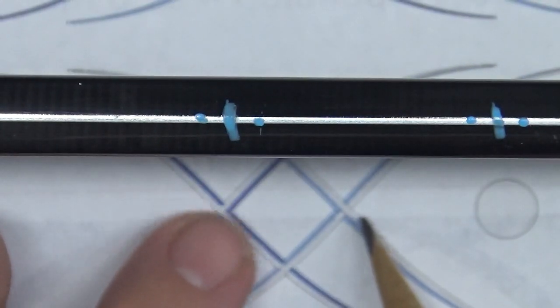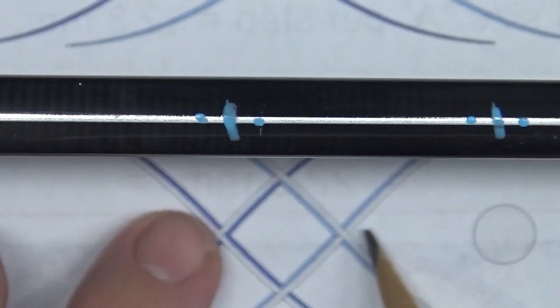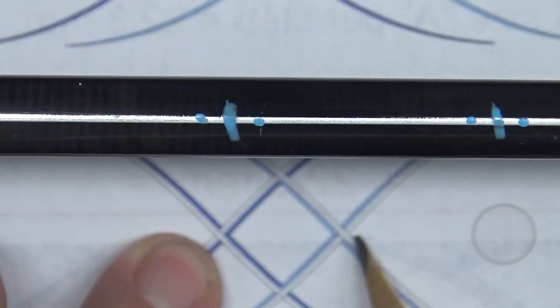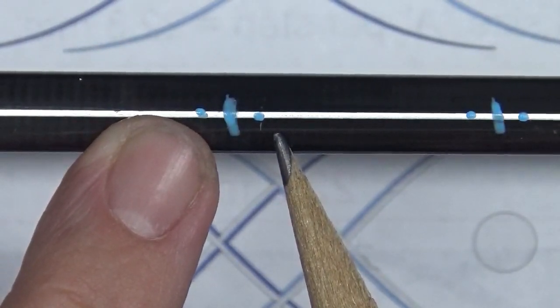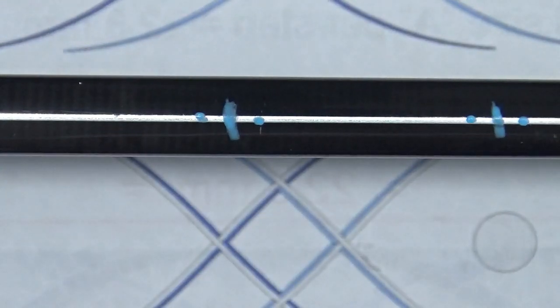And then right after that, once you had the two threads here, one here and one here, then the white thread that's on the outside, or whatever colors you're choosing, but I'm just using this as an example, you would wrap these threads, the background threads, right to the outside of the two threads that you had just laid down.